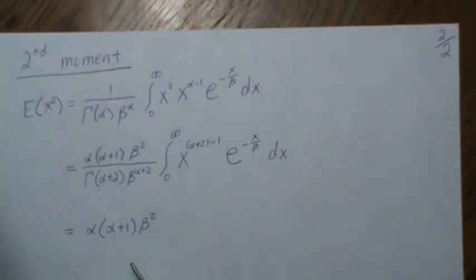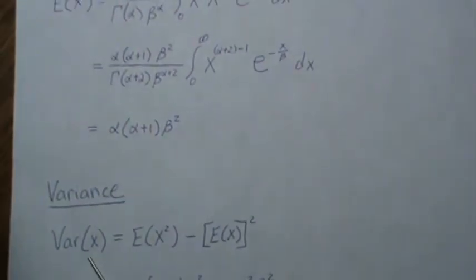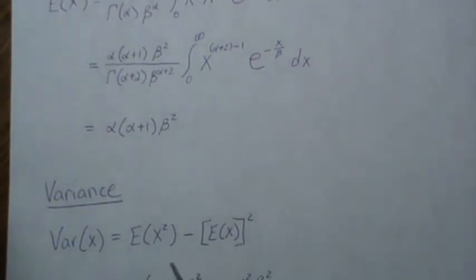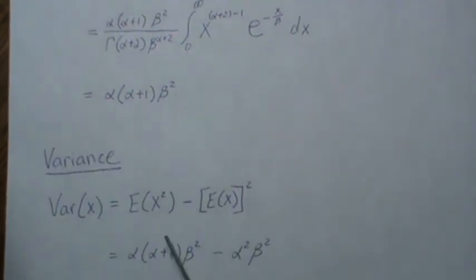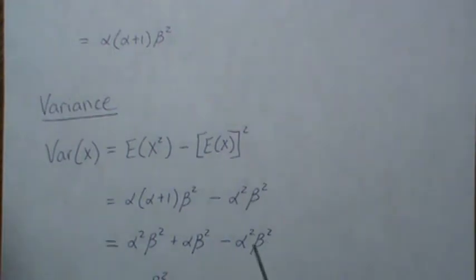Now we use that when we calculate the variance of a function. The variance is defined by this, and we just calculated the second moment and the first moment earlier, so we plug those values in. Now we do algebra, so over here we get this, and those two pieces cancel.